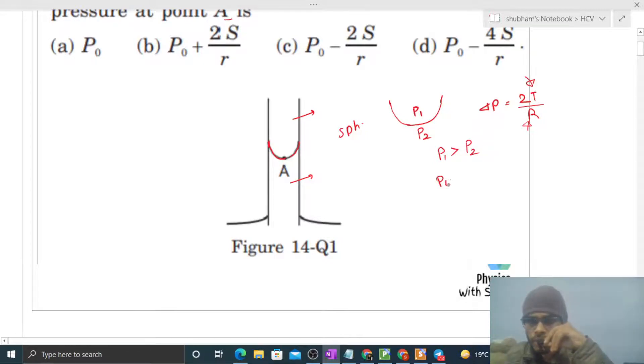So if we talk about it, point A pressure let's say P1, and the pressure is atmospheric pressure that is P0. So concave side pressure will be greater than P1, and the difference is P1 minus P0, that will be 2T divided by r.